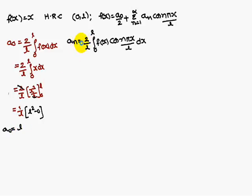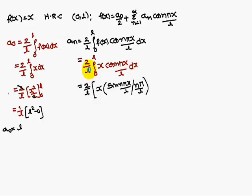Similarly an is equal to 2 by l integral 0 to l f(x) cos nπx by l dx. f(x) is x. Therefore 2 by l integral 0 to l x cos nπx by l dx. 2 by l integration of this one: x into cos integration is sin nπx by l by nπx by l minus x differentiation 1, sin integration minus cos nπx by l by n square π square by l square between the limits 0 to l.